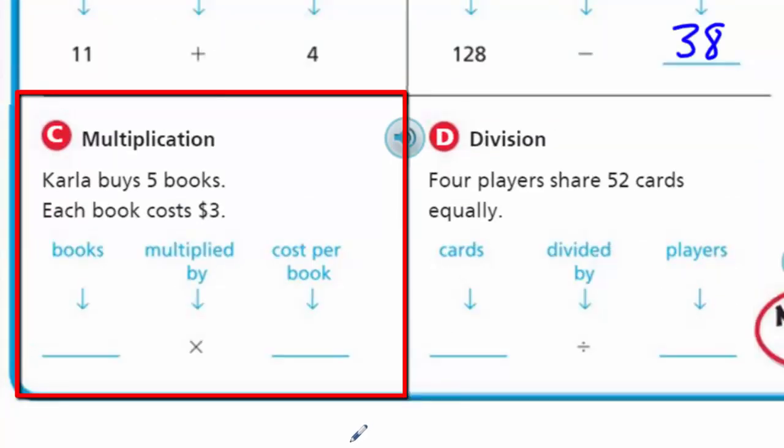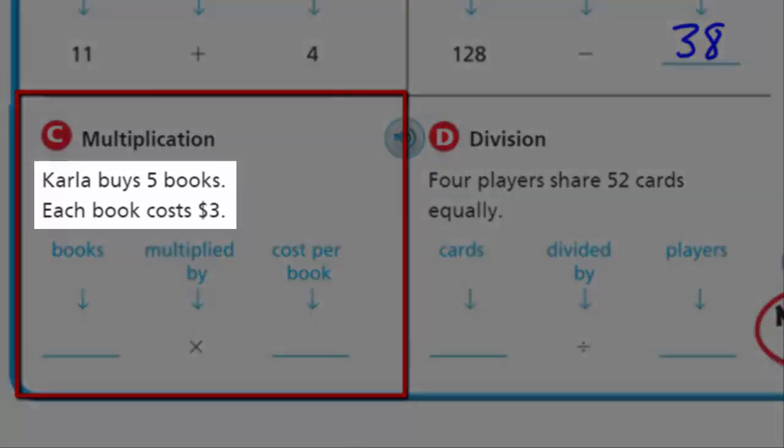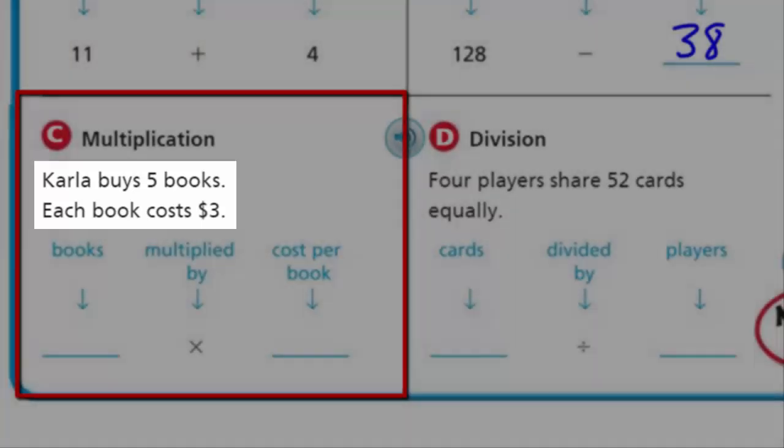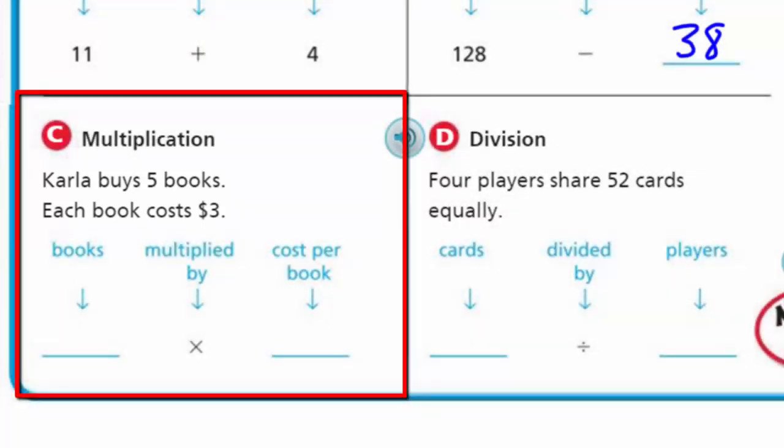Notice these are all different operations. For C, we have multiplication. It says Carla buys 5 books. Each book costs $3. So that expression to show that amount of money would be 5 books multiplied, because we're using the words each book costs $3. That would be 5 × 3.